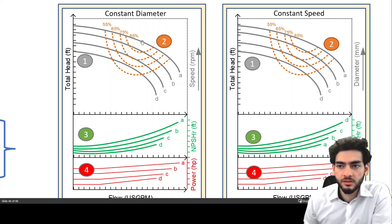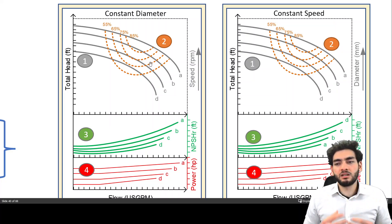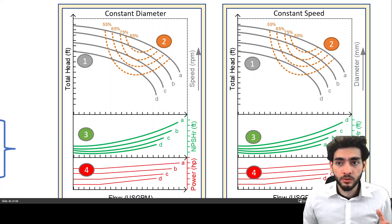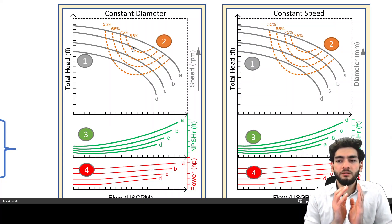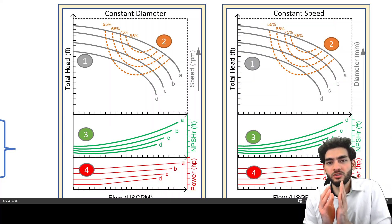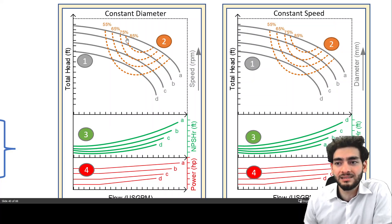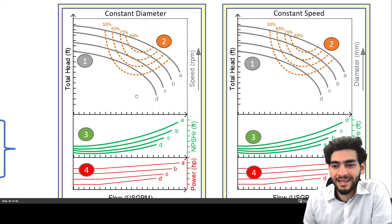And the efficiency curves are these dotted lines. And essentially the point of having these efficiency curves is because you want to operate as close as possible to the highest efficiency possible of the pump. And so the operating point of your pump, you would rather have an operating point of the pump that's as close as possible to a high efficiency or the best operating point. And I will discuss and I'll tell you what best operating point means in a second.